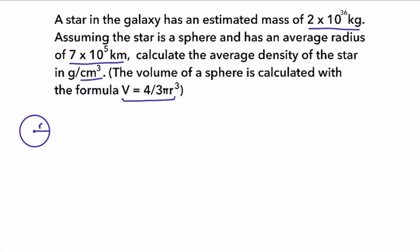To calculate the volume of the star, we start by using the formula 4 thirds pi r cubed. The volume is asked for in centimeters cubed, though, and we're given kilometers. So first we have to convert from kilometers to centimeters. We do that by moving the decimal place to the right five times, or changing the magnitude of 10 to the 5th to 10 to the 10th. So our radius is 7 times 10 to the 10th centimeters.